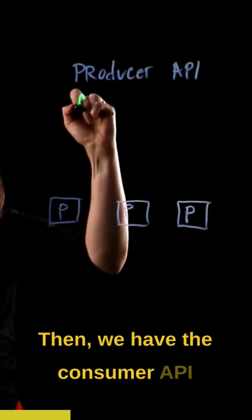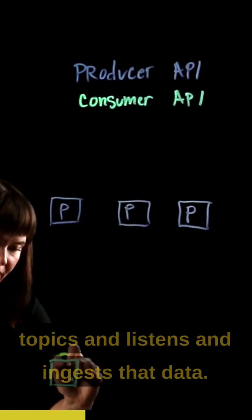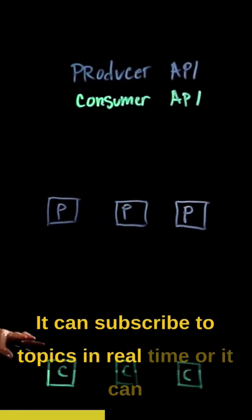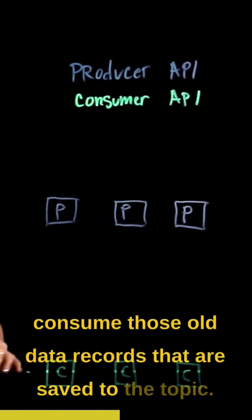Then we have the consumer API. The consumer API subscribes to one or more topics and listens and ingests that data. It can subscribe to topics in real-time or consume old data records that are saved to the topic.